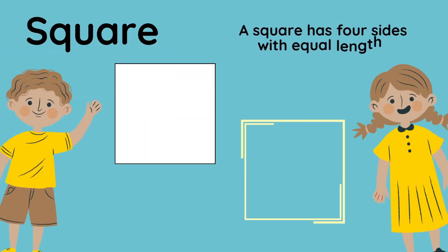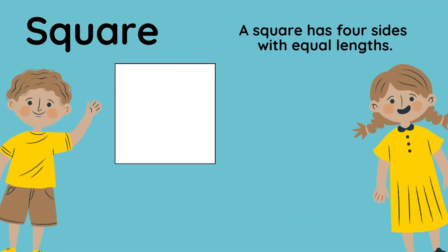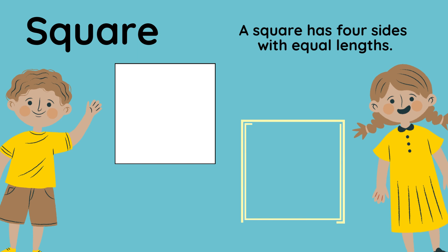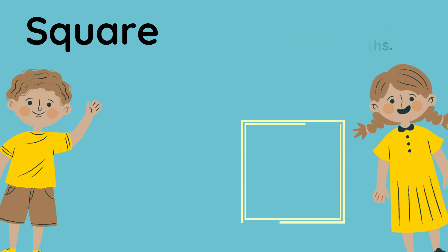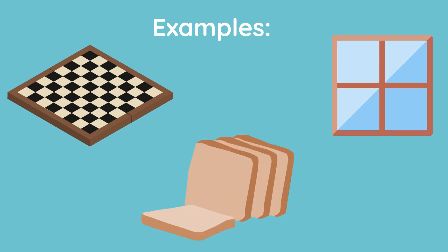This is a square. A square has four sides with equal lengths. Here are some examples that are square in shape: chessboard, bread slice, window.